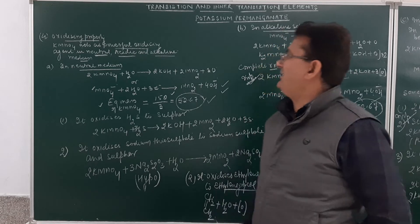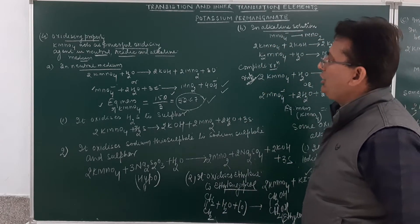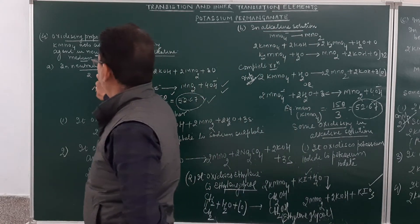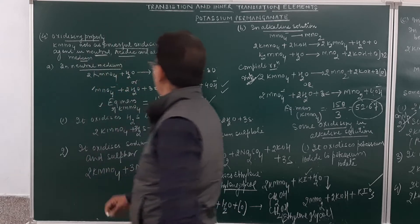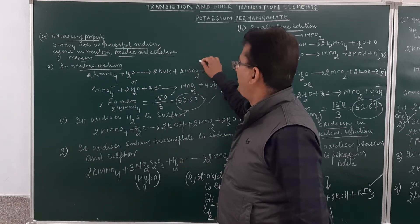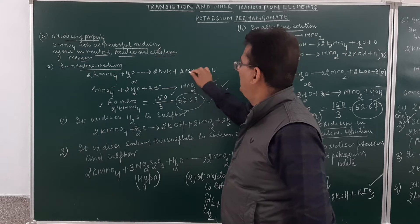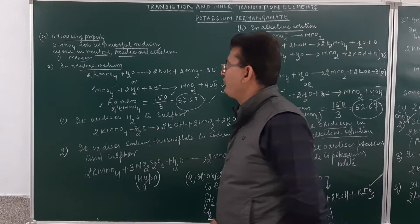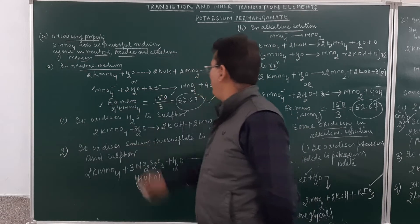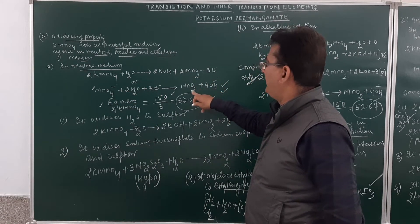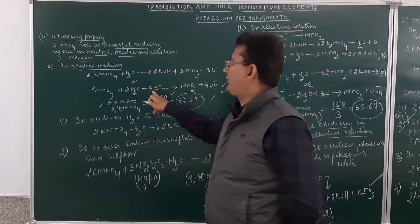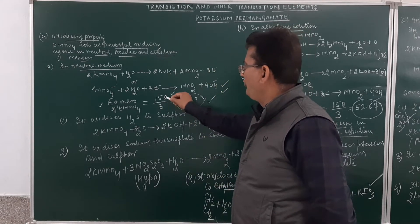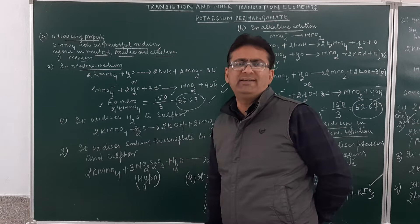When we consider the oxidizing property in neutral medium, you must learn the equation. KMnO4 when reacted with water will result in the formation of potassium hydroxide, manganese dioxide, and oxygen. In ionic form, MnO4⁻ will gain 3 electrons to form MnO2 and hydroxyl ions. Since manganese gains 3 electrons, the equivalent mass of KMnO4 will be 158 divided by 3, equal to 52.67.